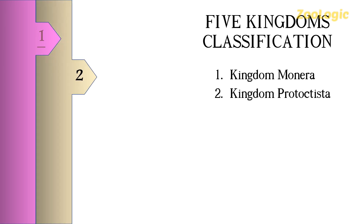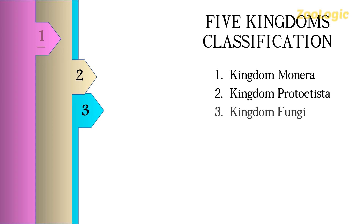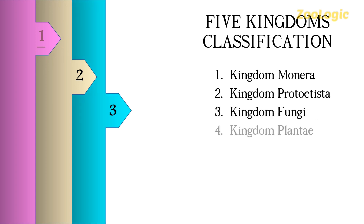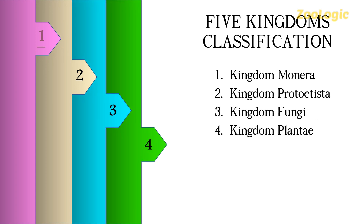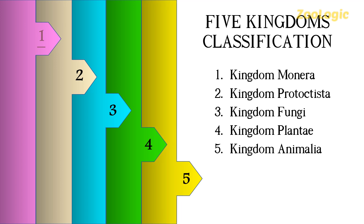The five kingdoms are: Kingdom Monera, Kingdom Protoctista, Kingdom Fungi, Kingdom Plantae, and Kingdom Animalia. All organisms are classified into these five groups, starting from simple and moving towards the complex.